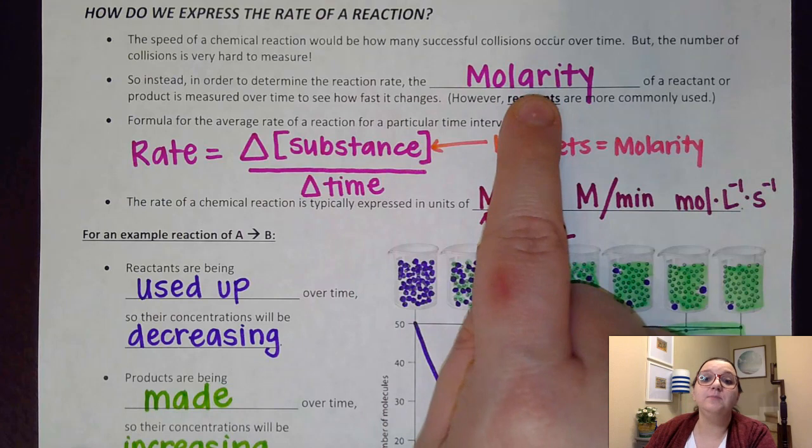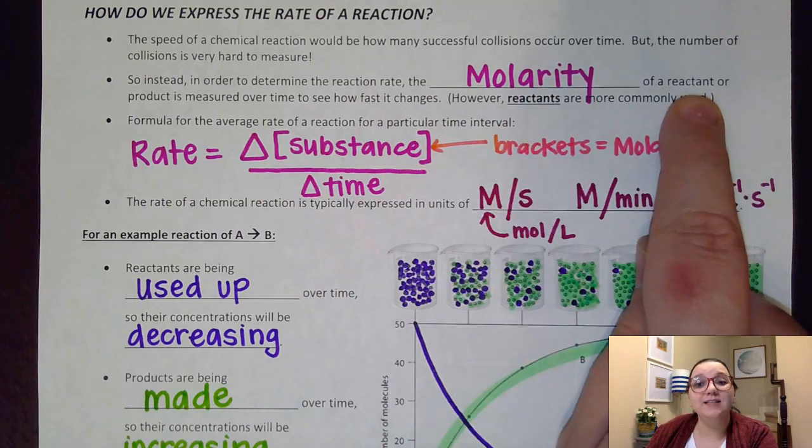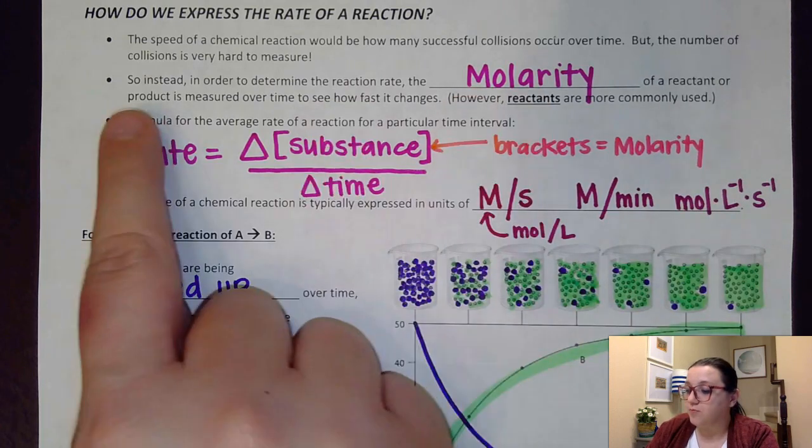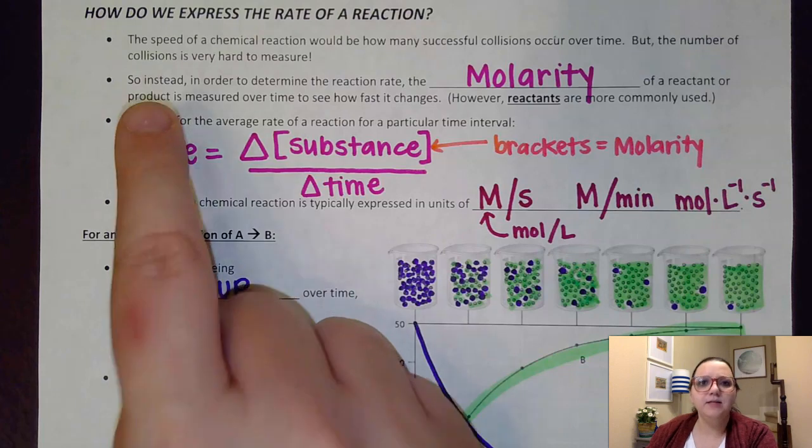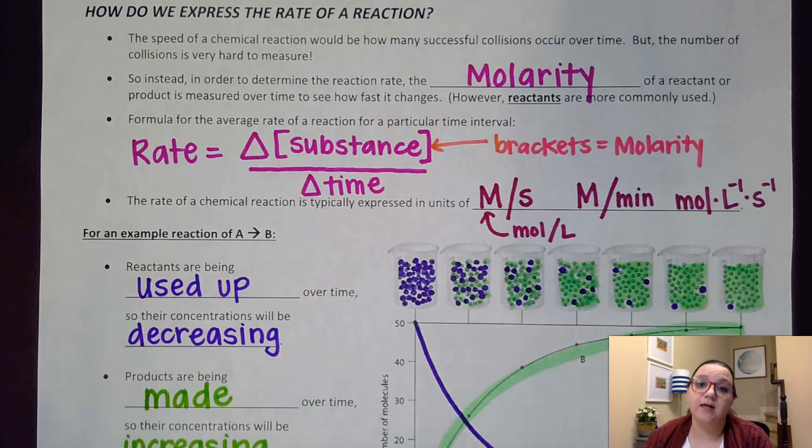So instead of doing that, what we tend to do is measure changes in molarity, either how a molarity of a reactant is decreasing over time, or how the molarity of a product is increasing over time. And by seeing how quickly that molarity is changing, we could get an idea of the speed of that chemical reaction.